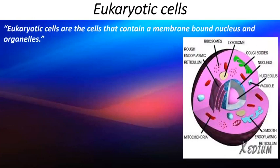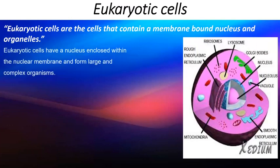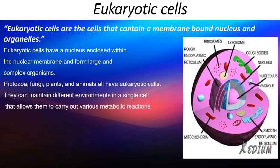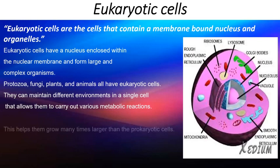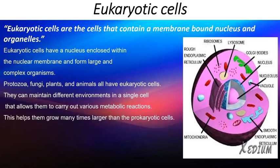Eukaryotic cells are the cells that contain a membrane-bound nucleus and membrane-bound organelles. Eukaryotic cells have a proper nucleus enclosed within the nuclear membrane and form large and complex organisms. Protozoa, fungi, plants, and animals all have eukaryotic cells. They can maintain different environments in a single cell that allows them to carry out various metabolic reactions. This helps them grow many times larger than the prokaryotic cells.